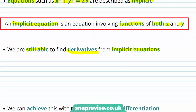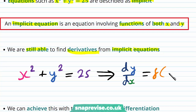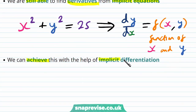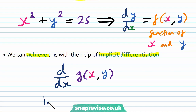In this case we start with x² + y² = 25 and we'd like to find dy/dx in the form f(x, y) — that is, a function consisting of both x's and y's. We can achieve this with the help of implicit differentiation. In general, we differentiate a function of x and y, g(x,y), and doing so is called implicit differentiation.